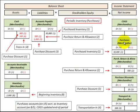Let's look at a purchase of inventory. Say we make a $30,000 purchase on account: we increase accounts payable by crediting it $30,000, and then the related debit would be to Purchases for merchandise — we debit and increase that by $30,000.